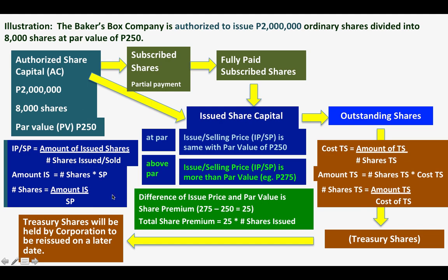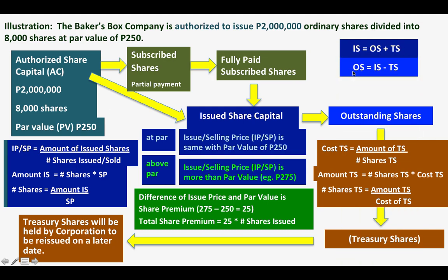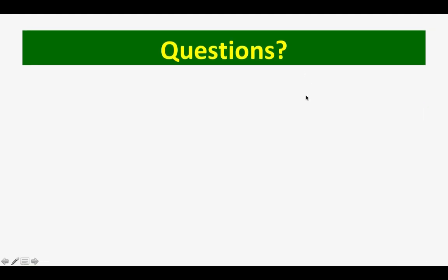In summary: issued shares is equivalent to outstanding shares plus treasury shares. Therefore, outstanding shares equals issued shares minus treasury shares, and treasury stocks equals issued shares minus outstanding shares.